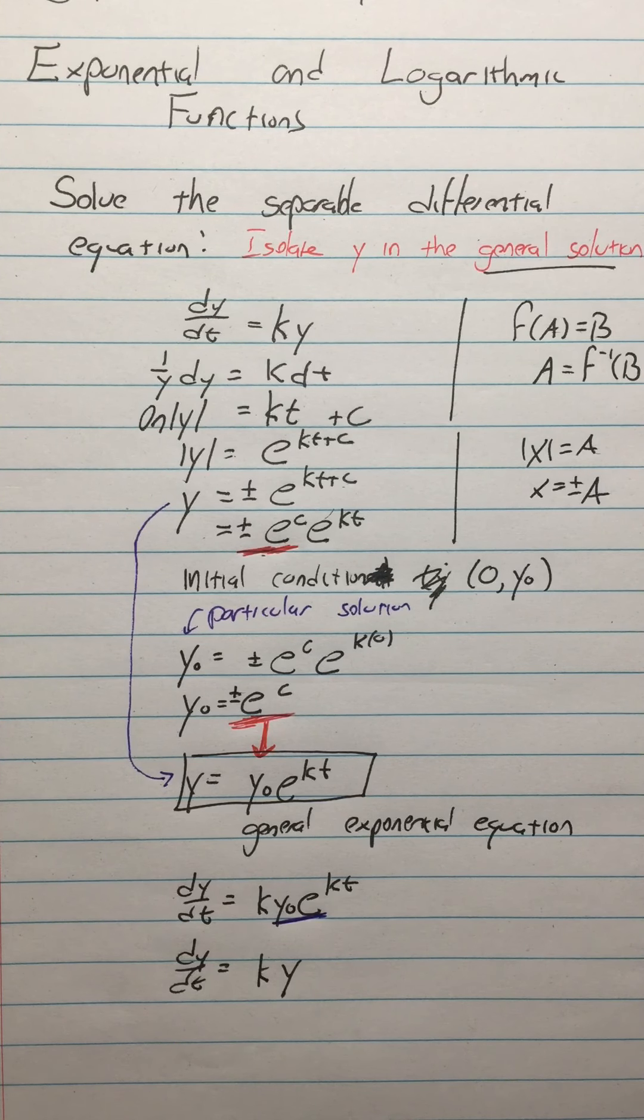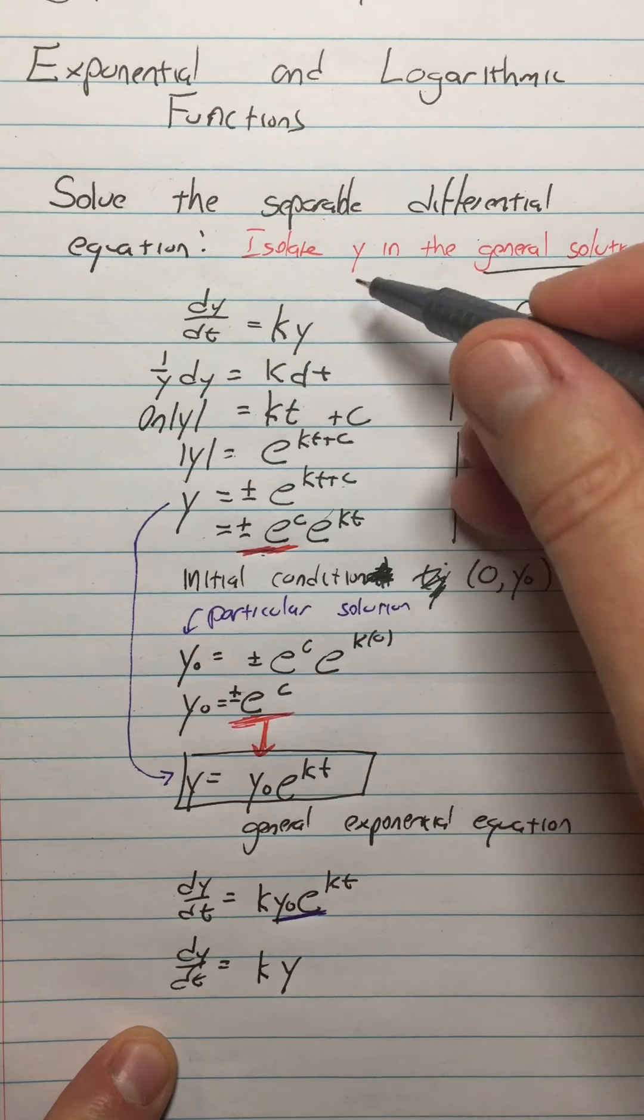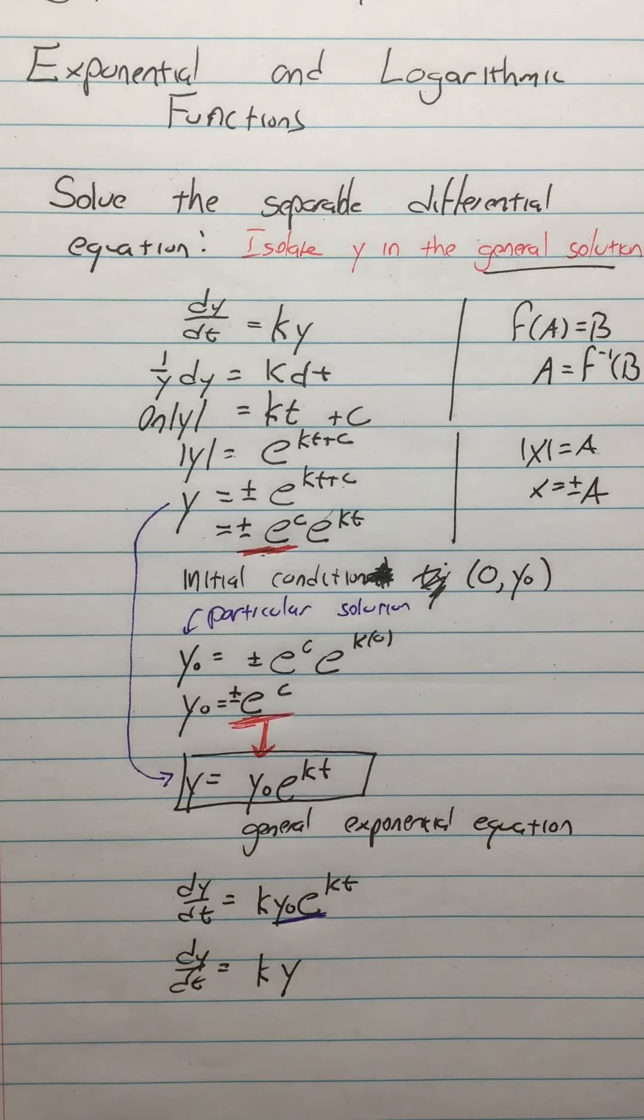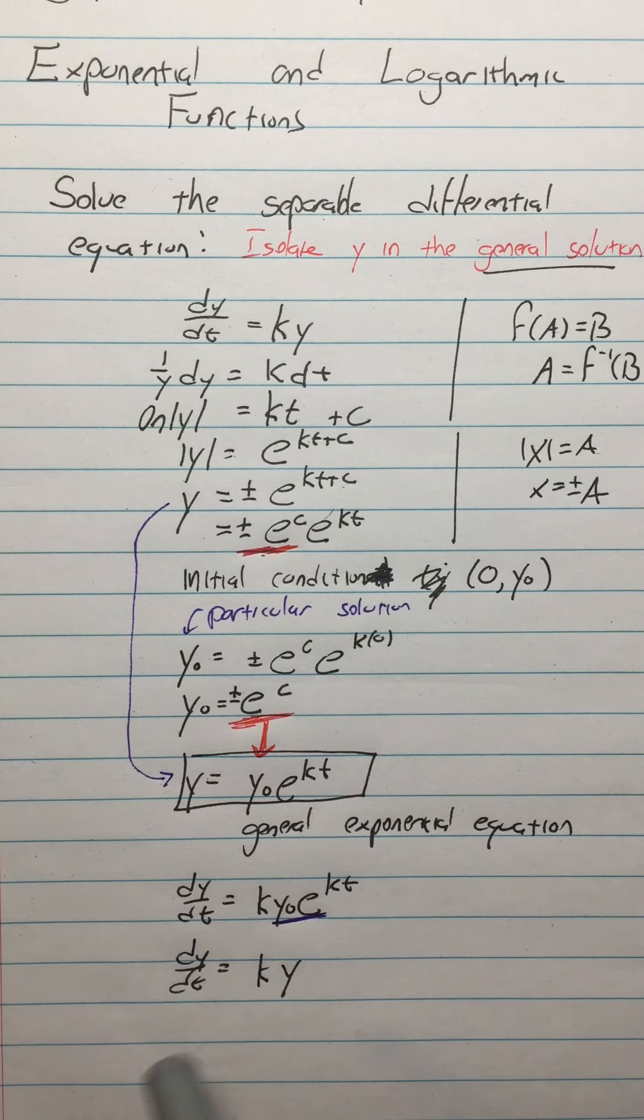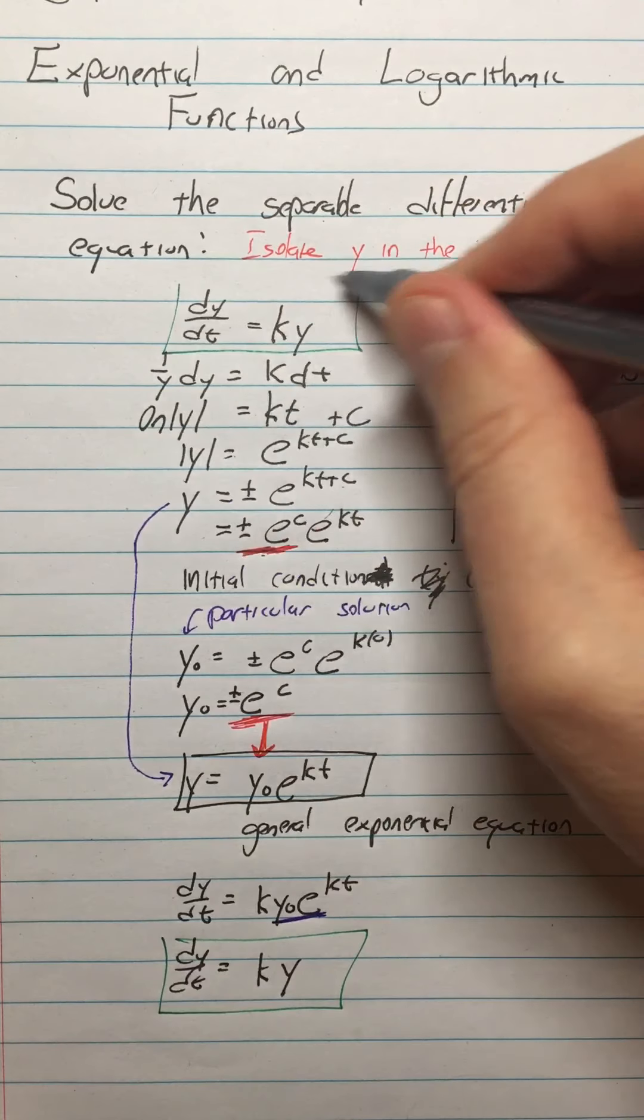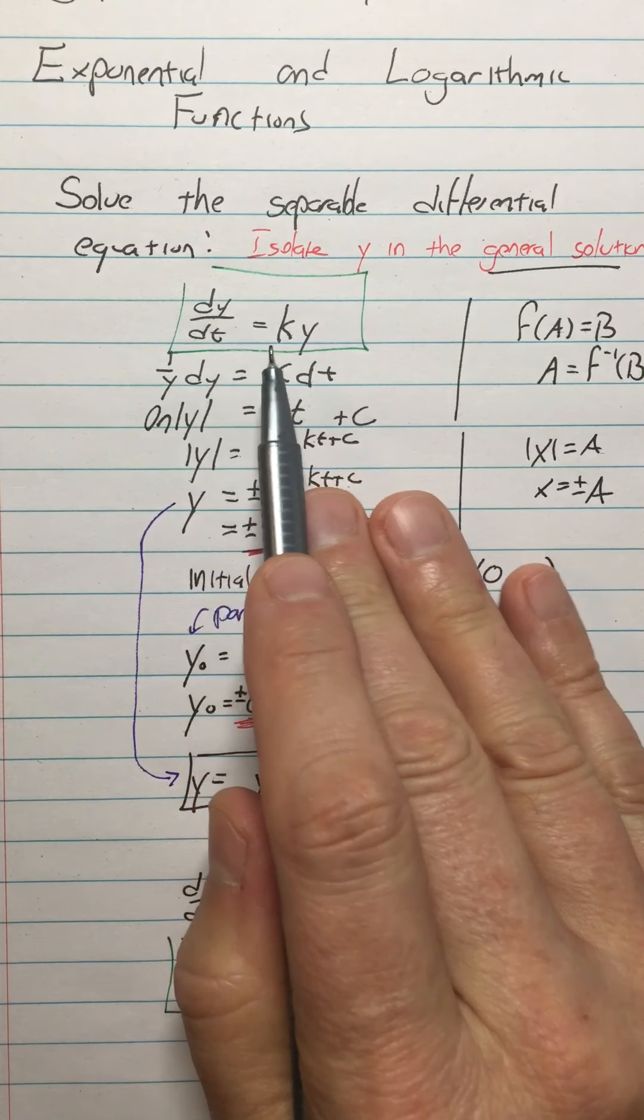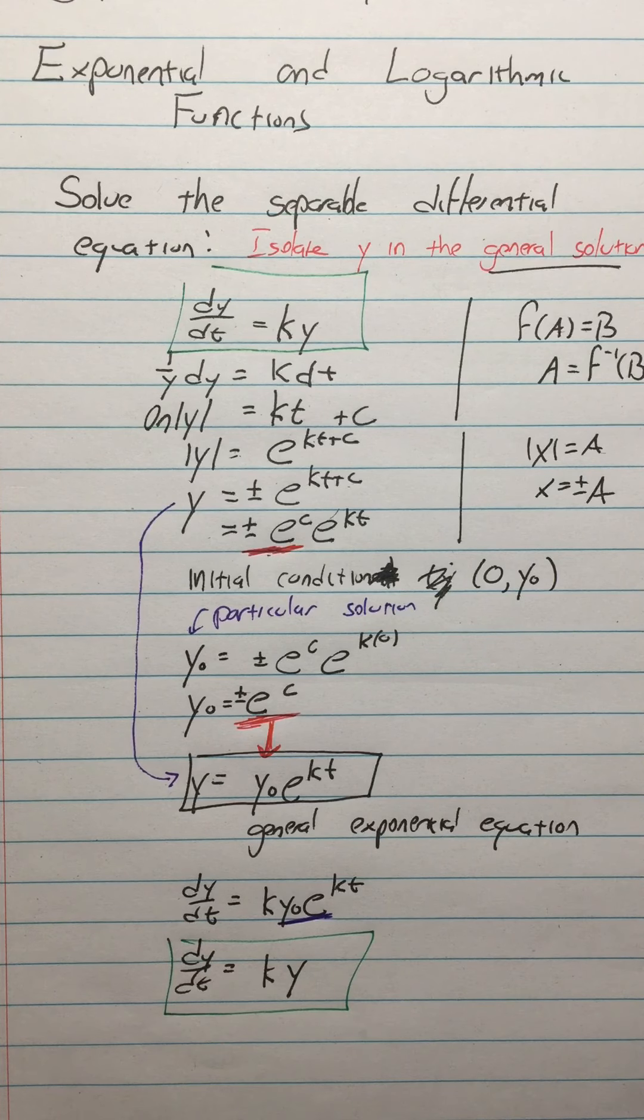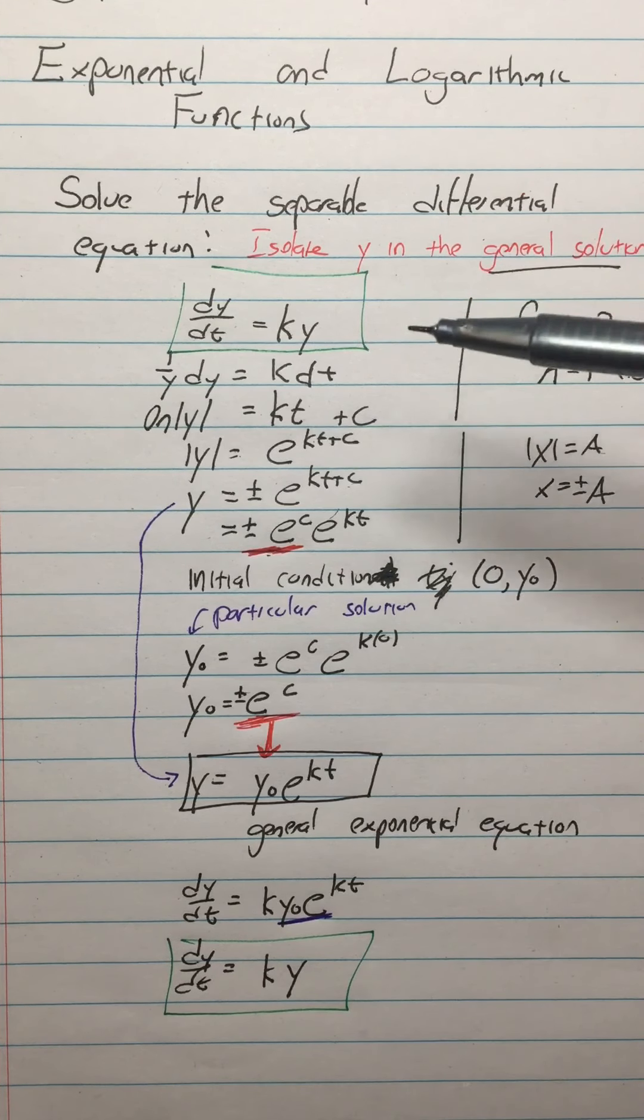Separable differential equation says if we have dy dt equals KY, we must have Y equals Y zero E to the KT. Try to understand that what this derivative equation is saying, that we end up with here and that we start with here. What it is saying is the rate of growth is proportional to the amount present. And that's what gives exponential functions all their character of rapid growth, the most rapid growth, in fact, that upward curve that they have. It's why they model things like population and investments.